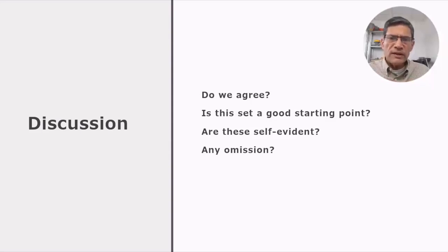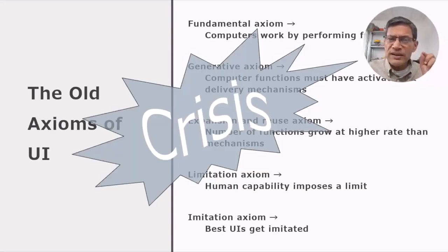After enunciating the old user interface axioms, we will have a discussion. We will see if we agree on this set. Are they a good starting point? We will explore if we consider that these axioms are self-evident. We mentioned that axioms are self-evident truths. So we need to examine if these axioms that we just stated are self-evident. Are there any omissions? Of course there are others. This list is incomplete. These axioms are in crisis.